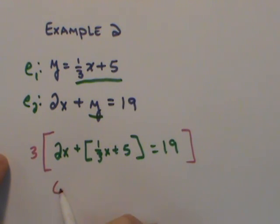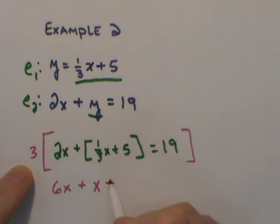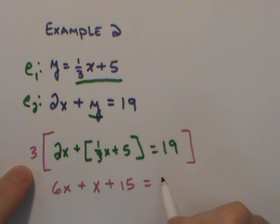That would produce six x plus, I don't really need these brackets here, so I'm going to go ahead and distribute. Three times a third would just be one x. Three times five would be fifteen, equaling three times nineteen is fifty-seven.